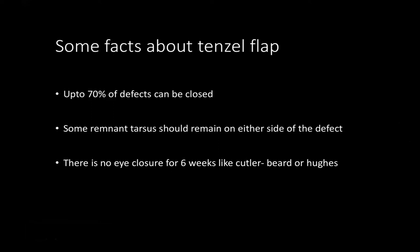Some key facts about the Tenzel flap: up to 70% of defect length can be closed, but importantly, some remnant tarsus must remain on either side of the defect. There is no eye closure period — unlike the Hughes or Cutler-Beard where the eye is closed for six to eight weeks. This makes the Tenzel flap beneficial for patients who have poor vision in the opposite eye, as it eliminates the need for eye closure.